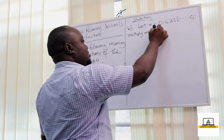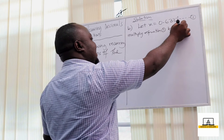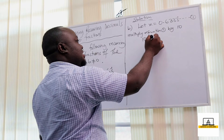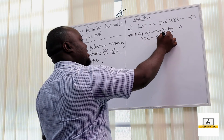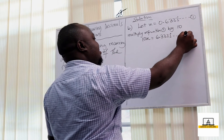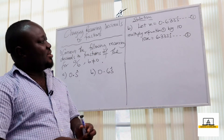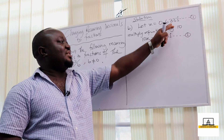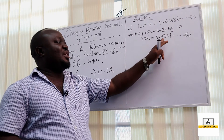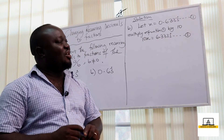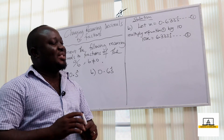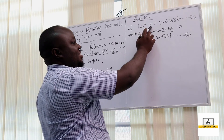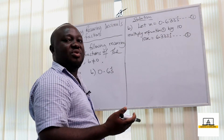We multiply equation 1 by 10, giving us: 10x = 6.3333... recurring. We call this equation 2. However, if we subtract equation 1 from equation 2 now — 0.6333 from 6.3333 — we won't get a whole number. So we need to also multiply equation 1 by 100 so the recurring 3s cancel when we subtract.